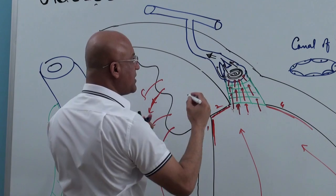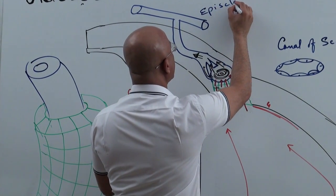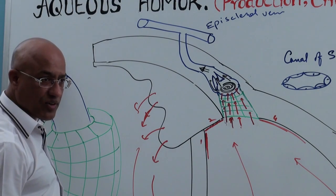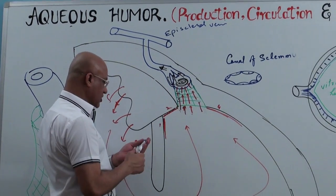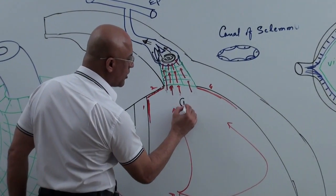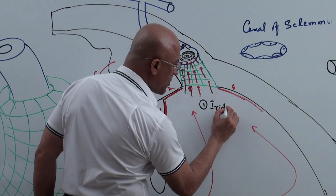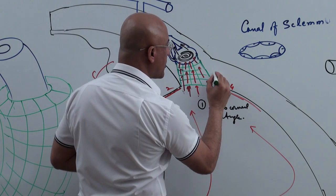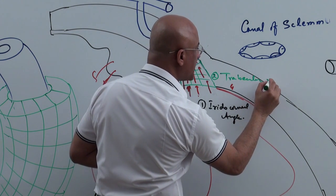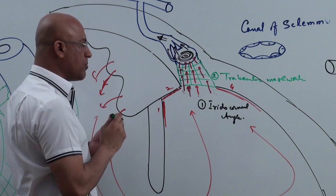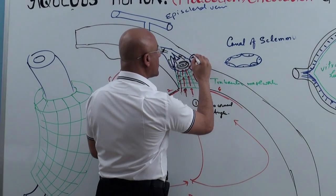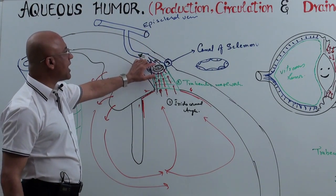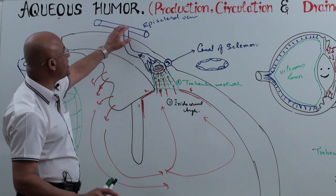From the canal of Schlemm, aqueous humor is entering collector channels. Then it drains into aqueous veins. These aqueous veins eventually drain into episcleral veins, which drain into larger extraocular veins and ophthalmic veins.